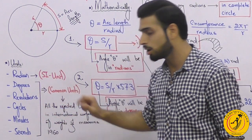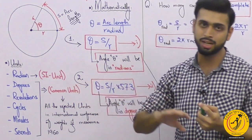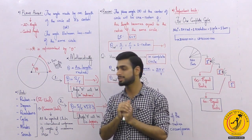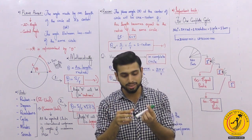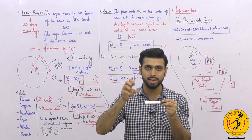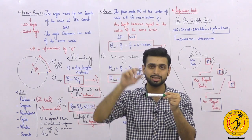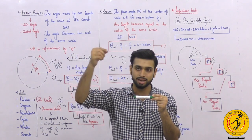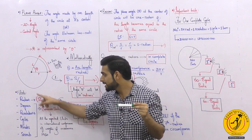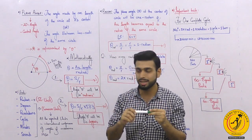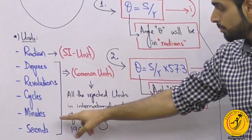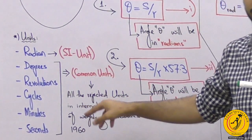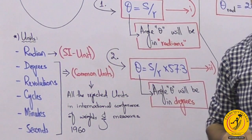What is the difference between SI and common units? In brief: in the 1960 international conference, one standard unit was selected for each physical quantity. The unit selected to measure length was accepted as the SI unit, and all the remaining units that were rejected — those are called common units. Similarly, for plane angle, the unit selected was radian, so radian is the SI unit, and all units rejected in the international conference of weights and measures in 1960 are called common units.